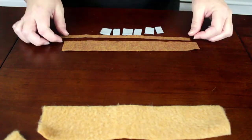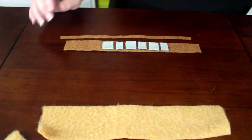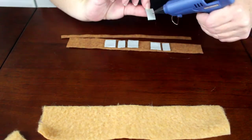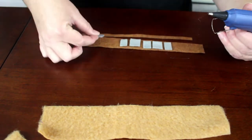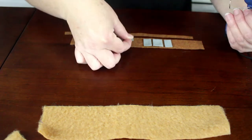Heat up your glue gun for the next part and glue the six pieces of gray felt onto the wide medium brown felt. Glue down a square, a rectangle, a square, a rectangle, a square, and a rectangle. Make sure to leave a space in between the first three and the last three.